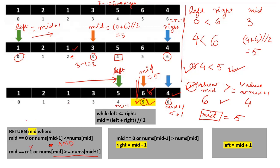To summarize: we use two pointers, left and right. We shift left towards the right or right towards the left to find a mid value. The mid value helps us reach the final output based on three conditions: the first returns mid as the answer, the second modifies the right pointer shifting it left, and the third (the else case) shifts the left pointer towards the right. Now let's implement this in Python.